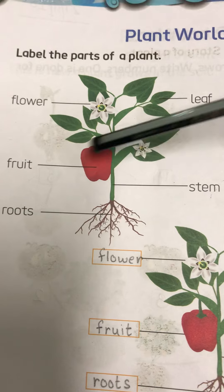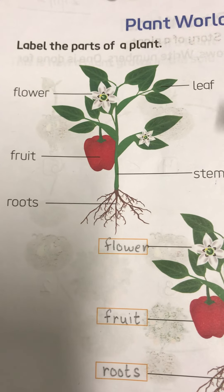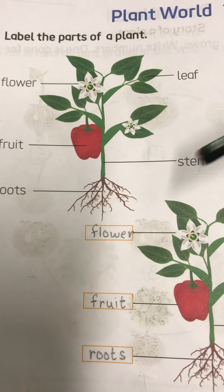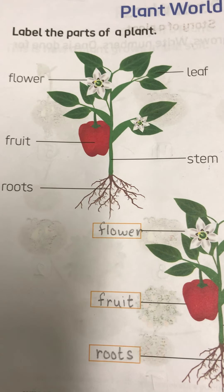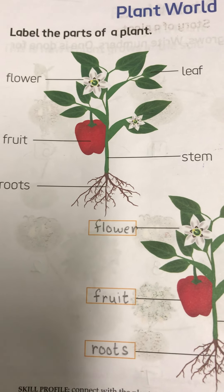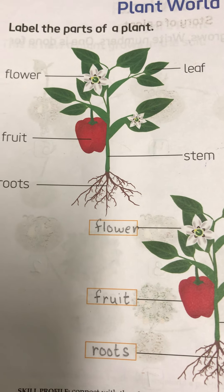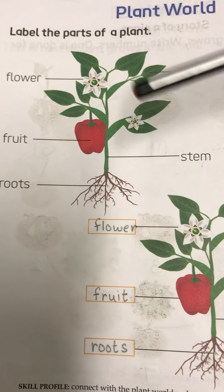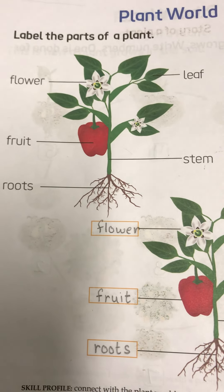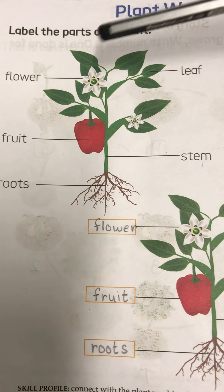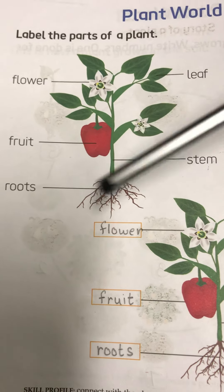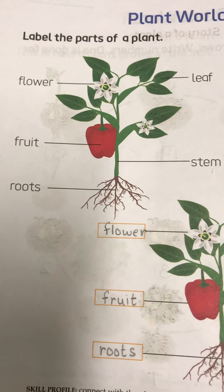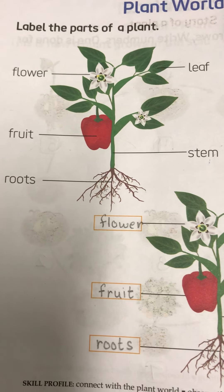Each part of a plant has several functions to do. Do you know that whatever parts are in plants, they have different work to do? To keep the plant healthy — flower, fruit, root, stem, and leaf — each one does something so that the plant stays healthy.